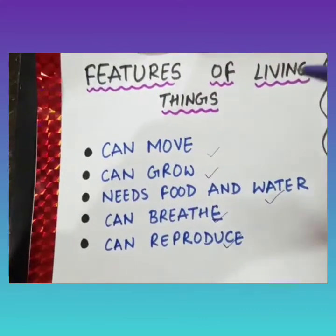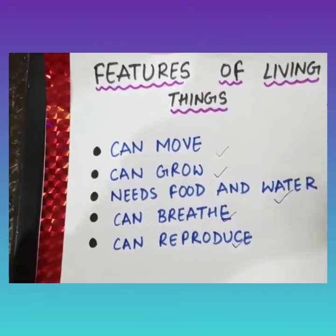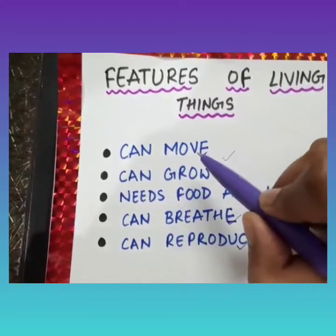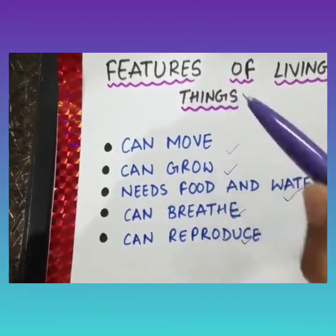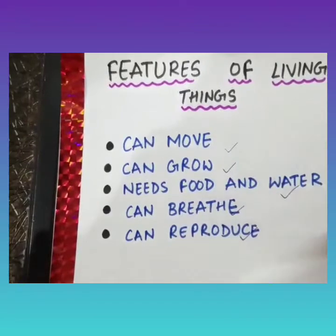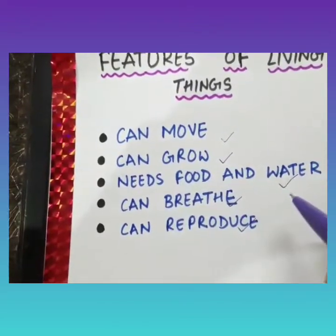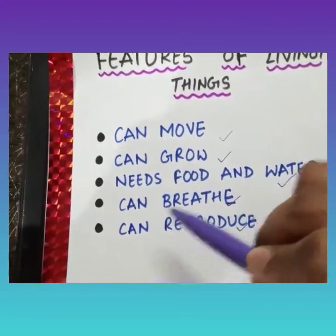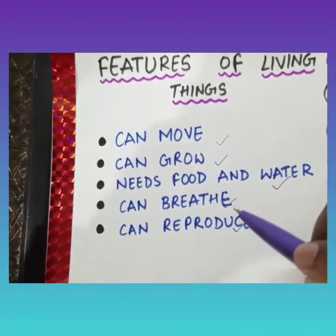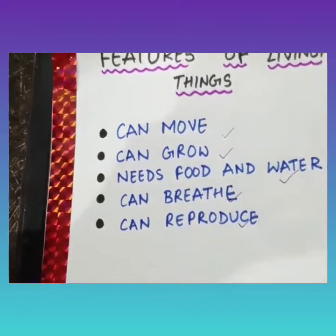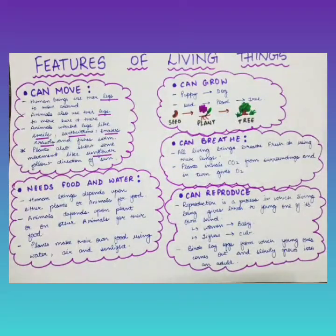So students, let us first discuss the features of living things. Living things can move. Living things can grow. Living things need food and water. Living things can breathe. Living things can reproduce. Now let us discuss these features one by one.